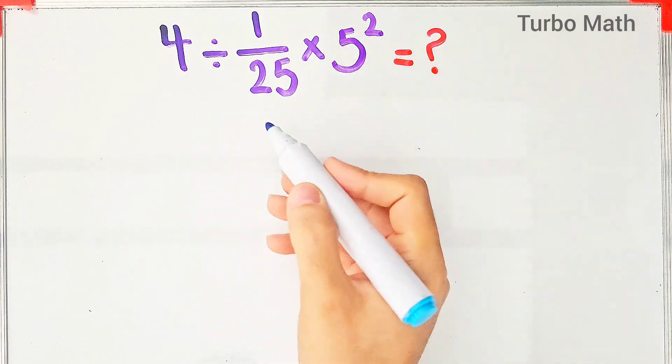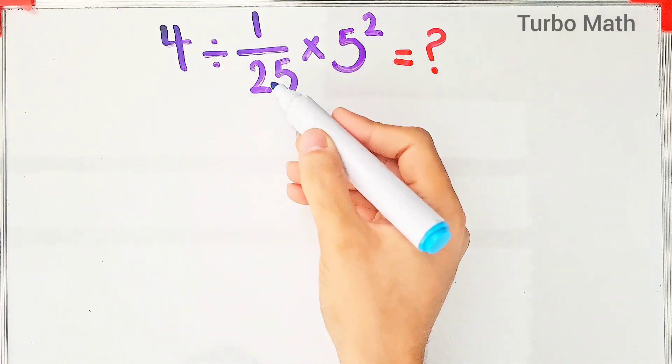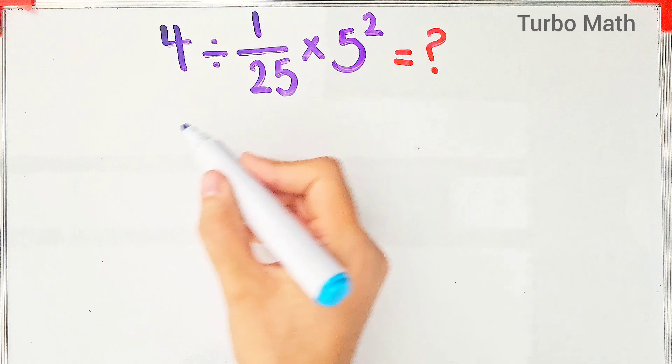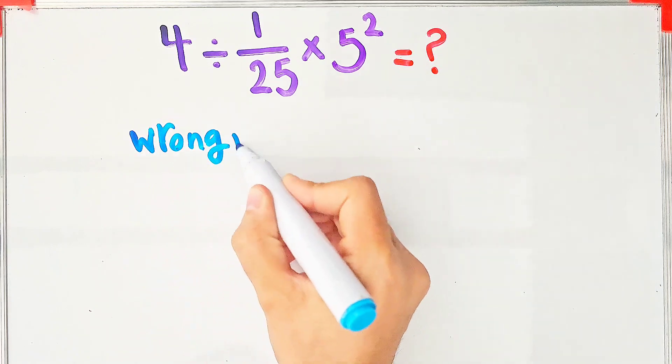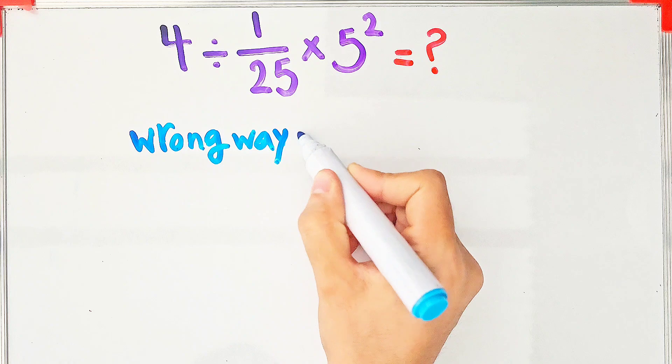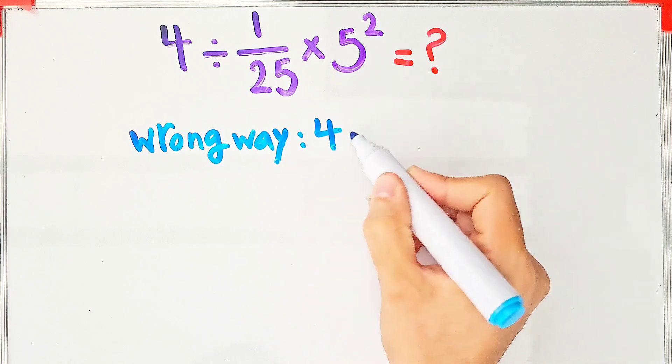Hi friends, welcome to Turbo Math channel. 4 divided by 1 over 25, then times 5 to the power of 2. Some people solve this question like this, which is actually the wrong method: 4 divided by 1 over 25.